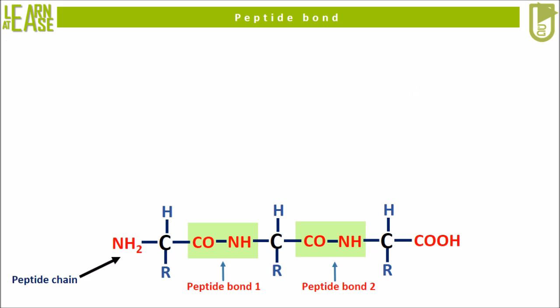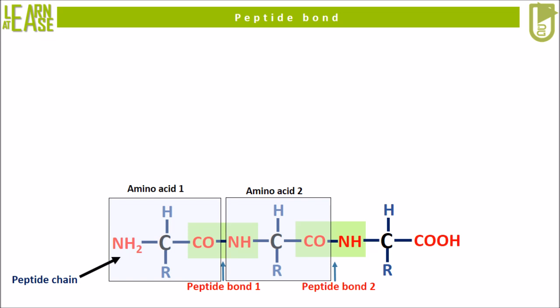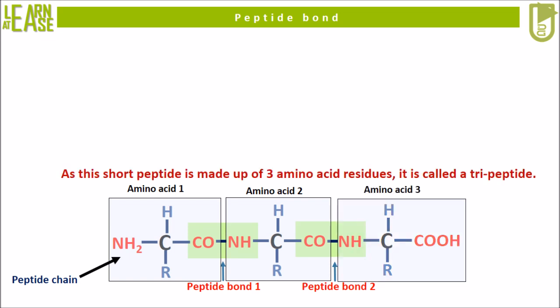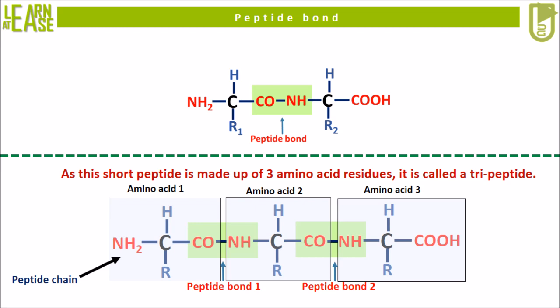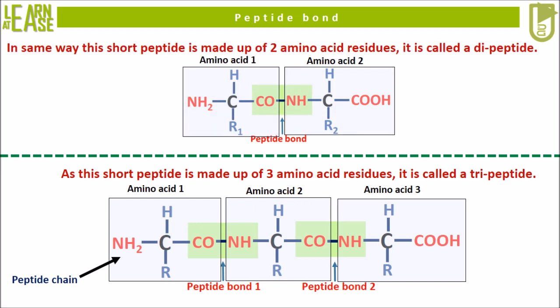This peptide is a product of three amino acids: amino acid 1, amino acid 2, and amino acid 3. As this short peptide is made up of three amino acid residues, it is called a tripeptide. In the same way, a peptide made of two amino acids is called a dipeptide.